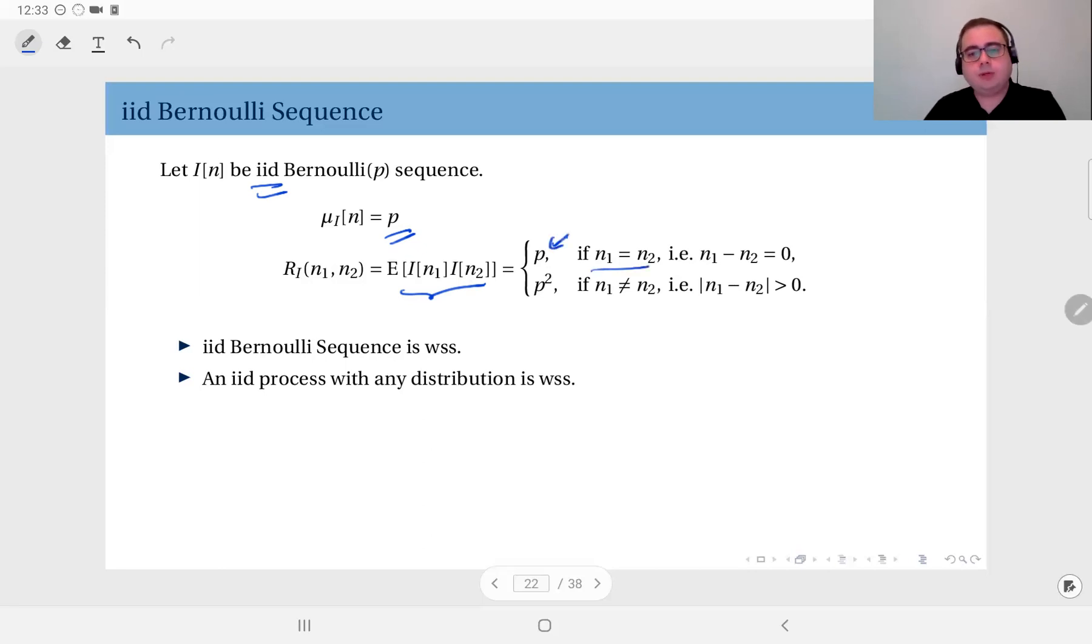Or if N1 and N2 are different, then I N1 and I N2 are independent. Therefore, this autocorrelation becomes expected value of I N1 times expected value of I N2, in this case. And we know that this is P, this is also P, so the result is P squared. So when you actually write this in this way, if N1 equals N2, it is P. If N1 doesn't equal N2, it's P squared. You can alternatively write this as N1 minus N2 is 0 or not.